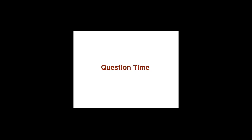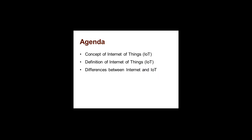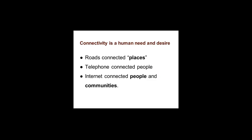Internet of Things is a new world of connected objects — it goes beyond the current Internet. The Internet today connects people and machines, whereas the Internet of Things connects objects. Connectivity is a basic human desire. When the Earth was too big with many civilizations — China, India, Mesopotamia — we always tried to get connected. In the earliest stages roads connected places; the Silk Route connected China to the Middle East, creating communication and business. Then telephones connected people, overcoming physical distance. The Internet connected people and communities, taking connectivity to a higher level.